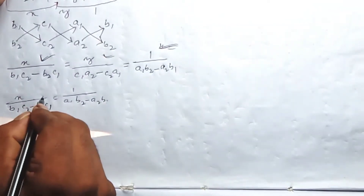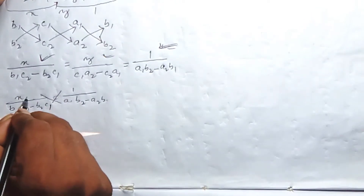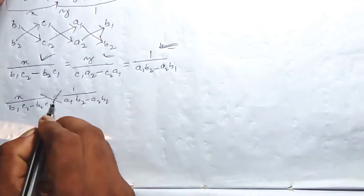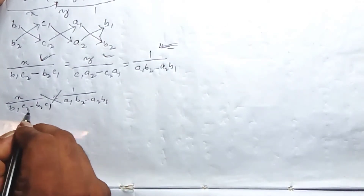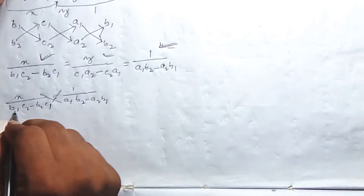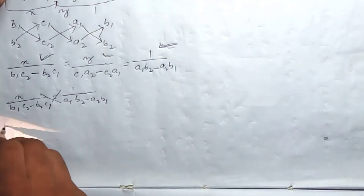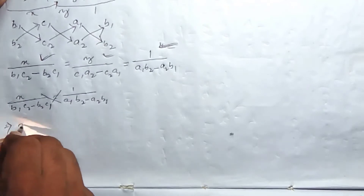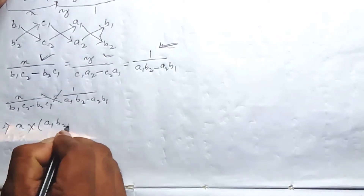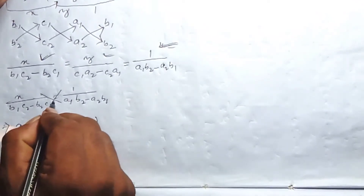We apply cross-multiplication. We get x into a1 b2 minus a2 b1, and on the other side b1 c2 minus b2 c1. So x multiplied by a1 b2 minus a2 b1 is equal to b1 c2 minus b2 c1.